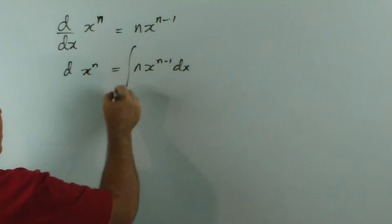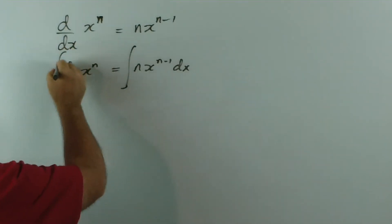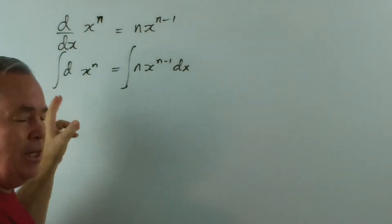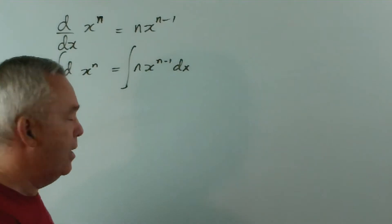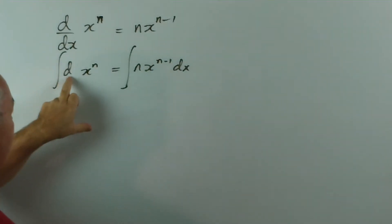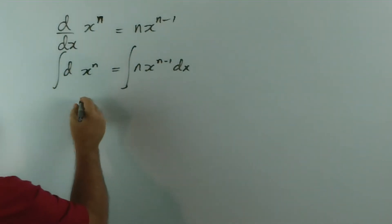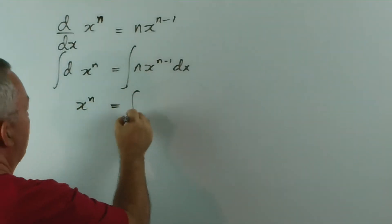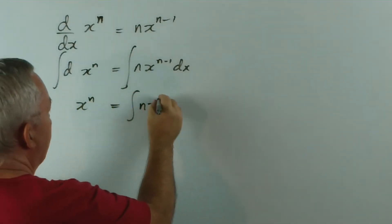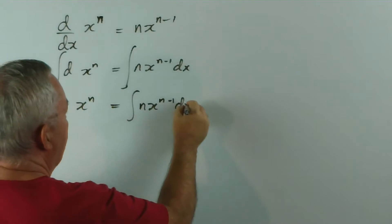I'm going to stick it in front, and remember that integrating is anti-differentiating. So, if that's the derivative of x to the n, this is the integral, or the anti-derivative of the derivative. They undo each other. So, we have x to the n equals the integral of nx to the n-1 dx.